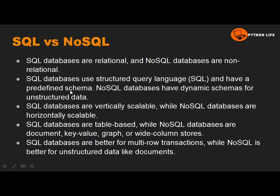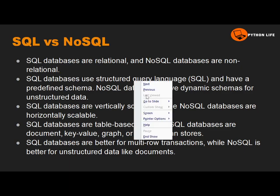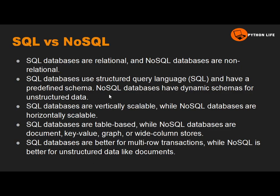SQL databases are maintained using a predefined schema. Schema means a predefined structure — predefined queries and predefined commands. What NoSQL databases have is dynamic schemas for unstructured data. That means when we maintain a NoSQL database, it uses new queries and unstructured data — data without a proper structure.